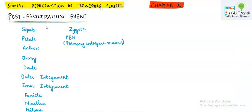Hello everyone. In today's video we will study post fertilization events, which is the last step of sexual reproduction. We have already finished the fertilization event in the previous video, wherein we discussed that double fertilization is a characteristic feature of angiospermic plants. Once fertilization is done — meaning when the zygote is formed and the primary endosperm nucleus is formed — this gives a signal to the plant and various changes occur.